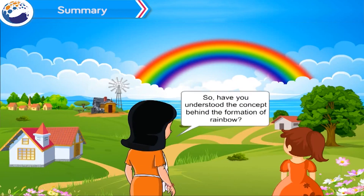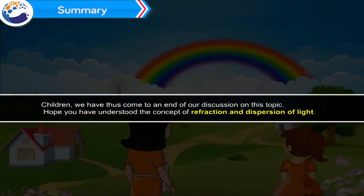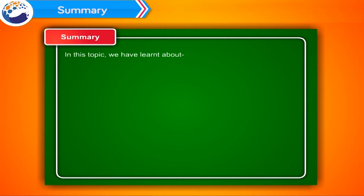So have you understood the concept behind the formation of a rainbow? Children, we have thus come to an end of our discussion on this topic. Hope you have understood the concepts of refraction and dispersion of light. In this topic we have learned about refraction of light and dispersion of light.